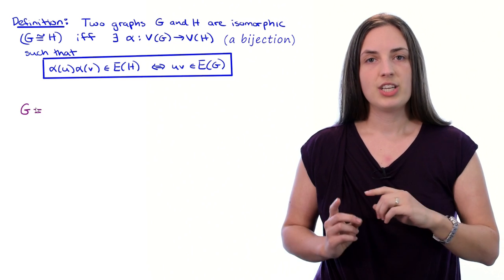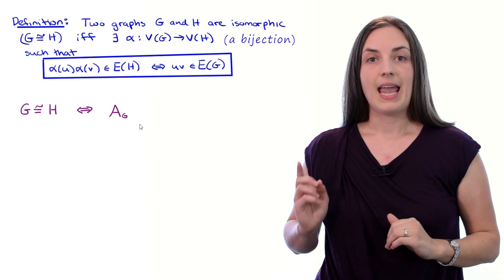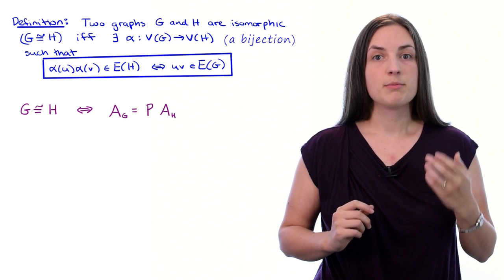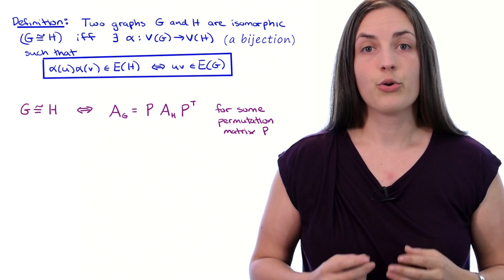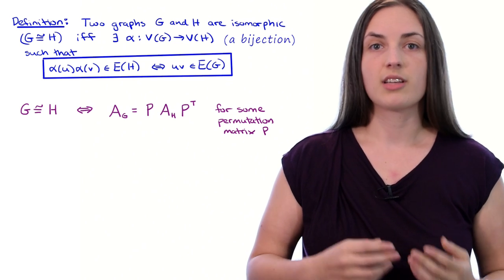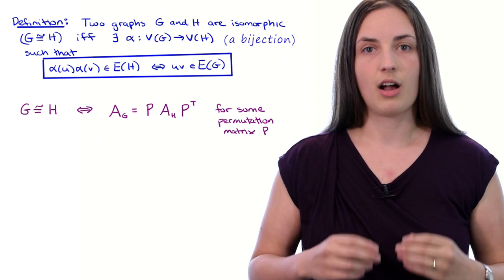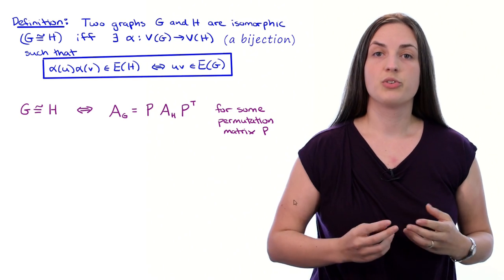It turns out that g is isomorphic to h if and only if A_g equals P times A_h times P transpose, for some permutation matrix P. Notice here that A_g represents the adjacency matrix of graph g, and A_h represents the adjacency matrix of graph h.